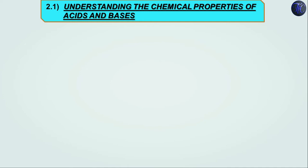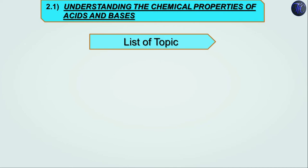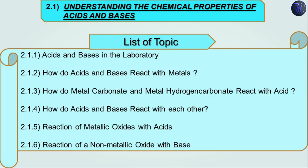Let's first see the list of topics we are going to cover. Acids and bases in the laboratory. How do acids and bases react with metals? How do metal carbonates and metal hydrogen carbonates react with acid? How do acids and bases react with each other? Reaction of metallic oxide with acids. And lastly, reaction of non-metallic oxide with bases. In this video lecture we are going to cover topic 2.1.1, that is acids and bases in the laboratory.